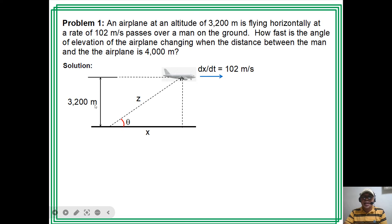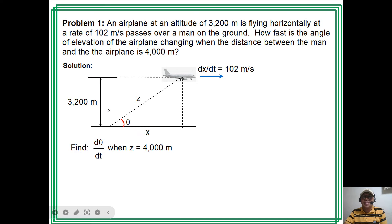In our problem, we are asked how fast the angle of elevation of the airplane is changing — so we solve for dθ/dt when z, the distance of the man to the airplane, is 4,000 meters. In the figure, we have formed a right triangle. The altitude is 3,200, the horizontal distance is x, and the hypotenuse is z.